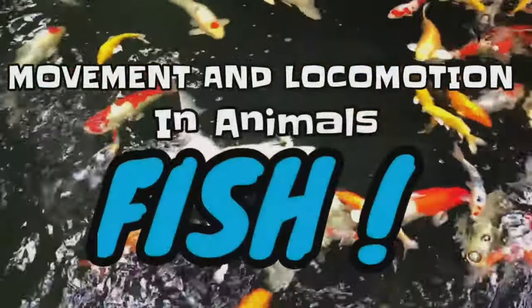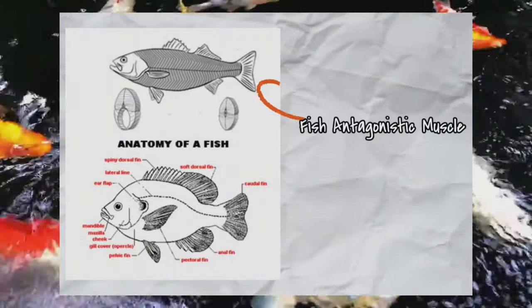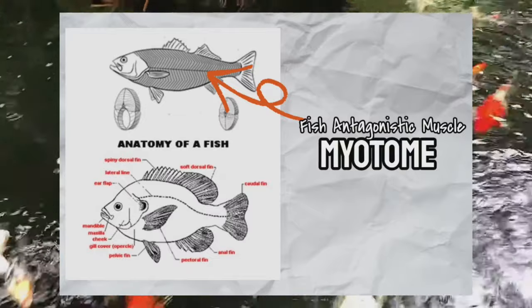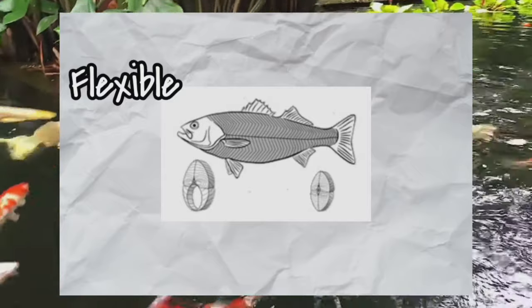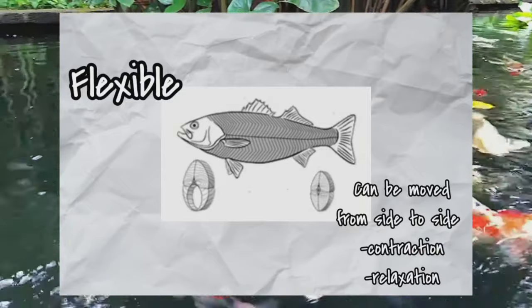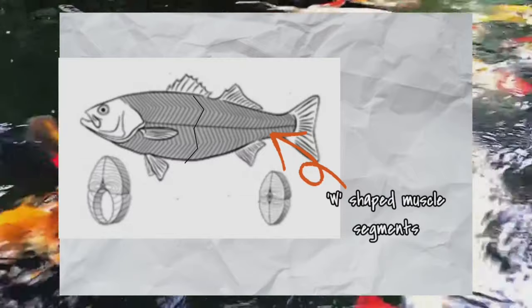Like humans, fish also have antagonistic muscles called myotomes. The fish vertebral column is flexible and can be moved from side to side by the contraction and relaxation of myotomes. The myotome consists of W-shaped muscle segments that act in opposite directions.